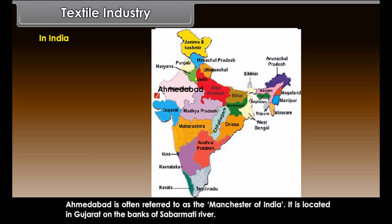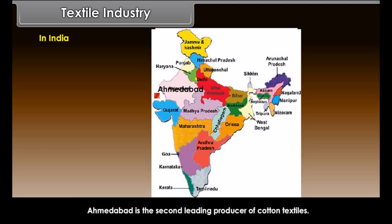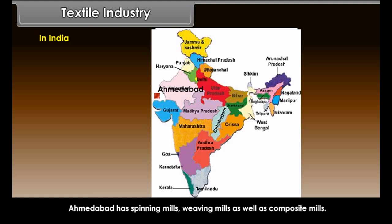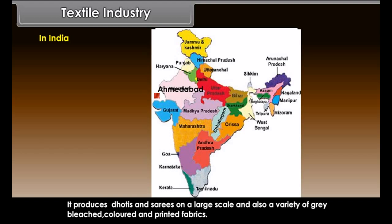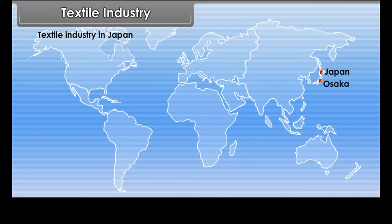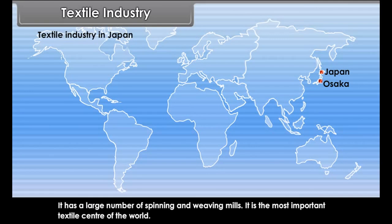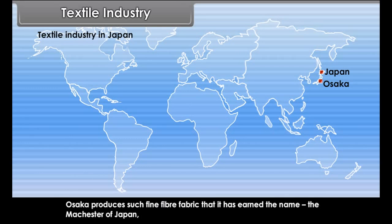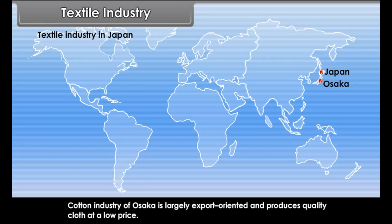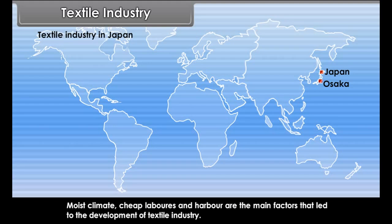Ahmedabad is often referred to as the Manchester of India. Located in Gujarat on the banks of the Sabarmati River, it is the second leading producer of cotton textiles in India, with spinning mills, weaving mills, and composite mills. It produces dhotis, sarees, and a variety of grey, bleached, coloured, and printed fabrics. Japan's textile industry has a large number of spinning and weaving mills — Osaka produces such fine fabric that it has earned the name the Manchester of Japan, with its cotton industry being largely export-oriented.